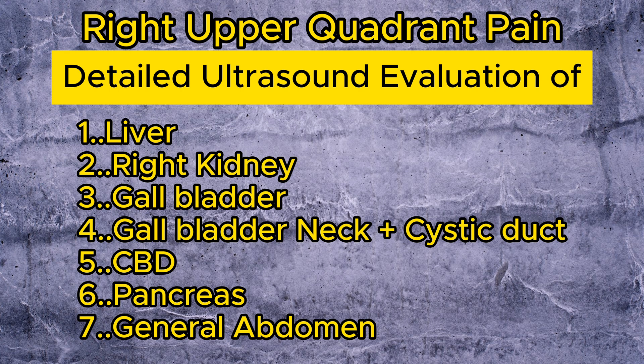In all patients with right upper quadrant pain, there should be a detailed ultrasound evaluation of the liver, right kidney, gallbladder, gallbladder neck and cystic duct, CBD, and pancreas.